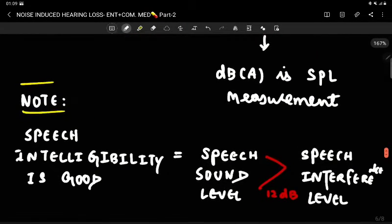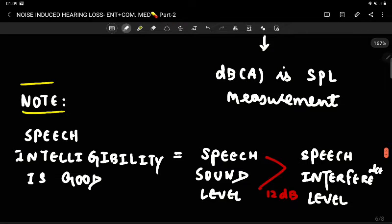One thing to note here is something called speech intelligibility. Whenever speech intelligibility is good, that means you are hearing me well amidst some background noise. It means the sound level of speech is 12 decibels more than the speech interference level.